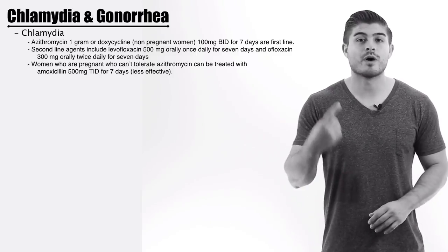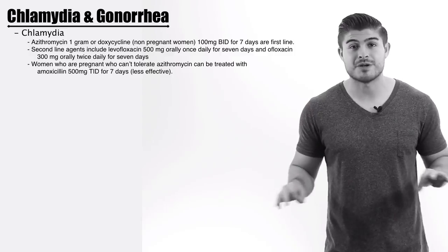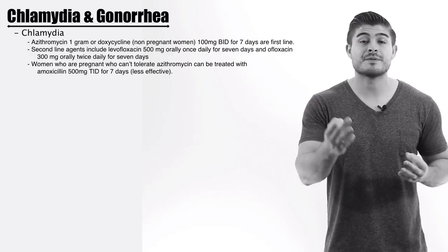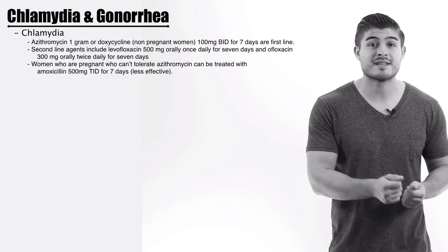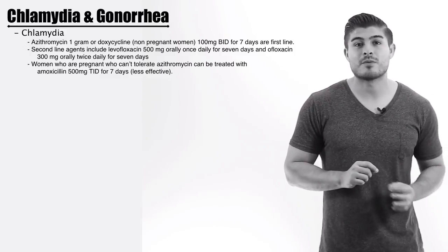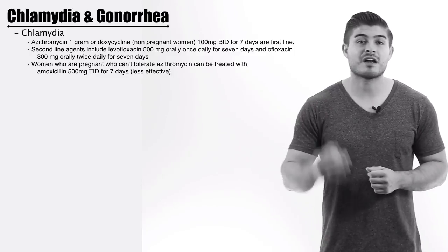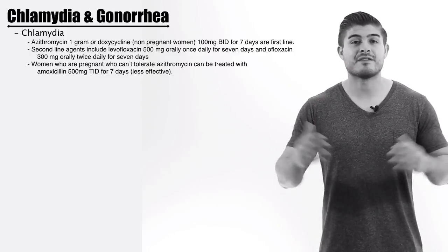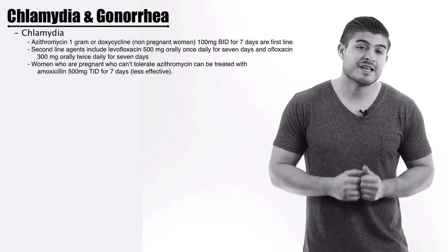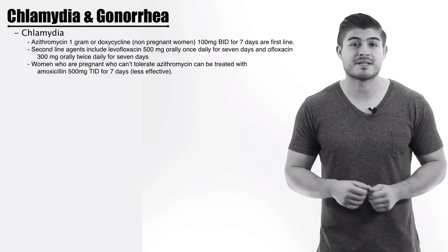For Chlamydia, we have two first-line options: azithromycin and doxycycline. Azithromycin is one gram, one dose — it comes at 500 milligrams, so we give two pills at the same time. The alternative first-line therapy is doxycycline 100 milligrams twice a day for seven days. Theoretically doxycycline is slightly more efficacious, but the difference is negligible. The problem with doxycycline is the twice-daily dosing and seven-day regimen — many patients don't comply. Azithromycin is more practical, though it can cause upset stomach, nausea, and even vomiting.